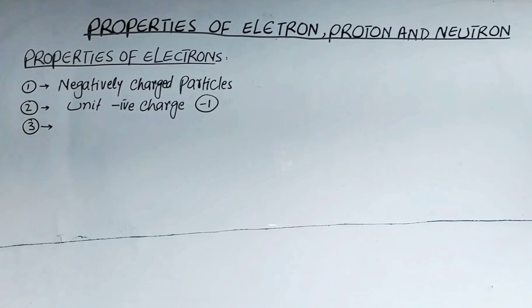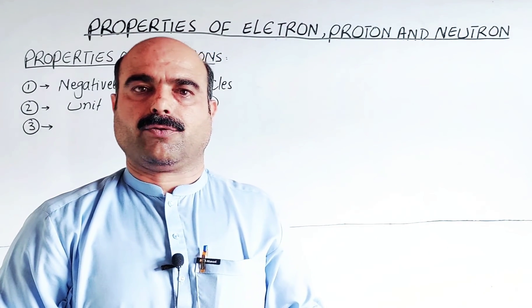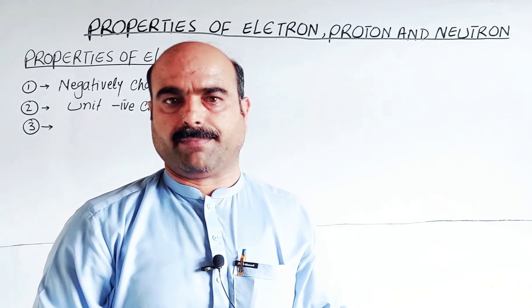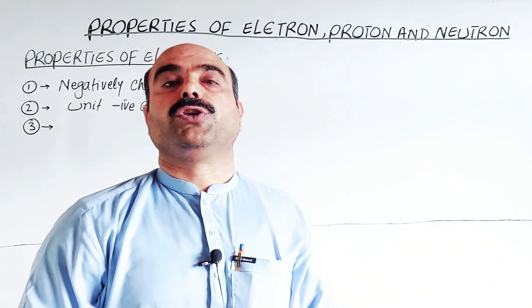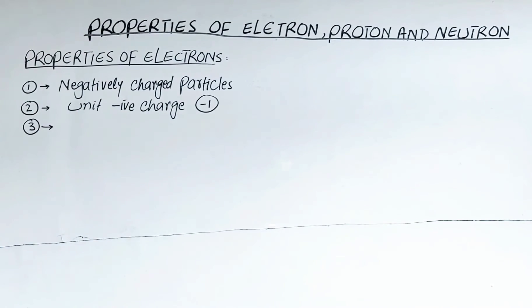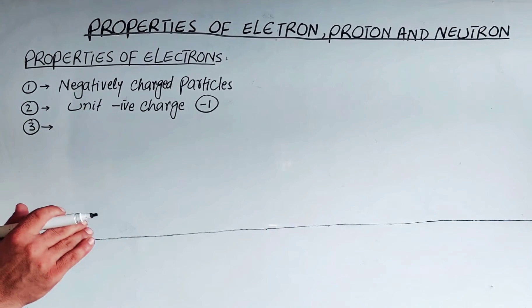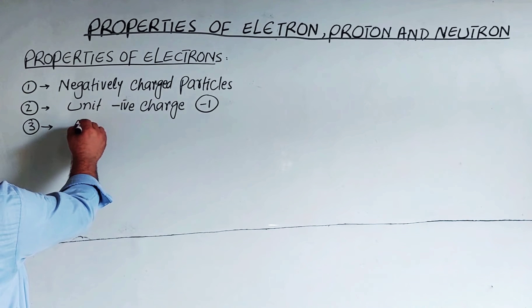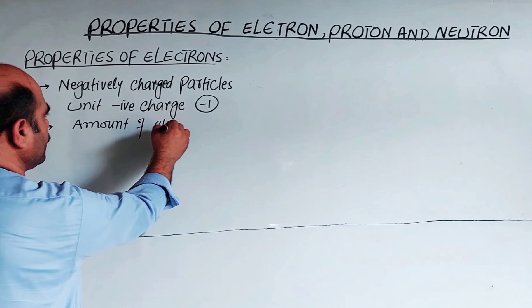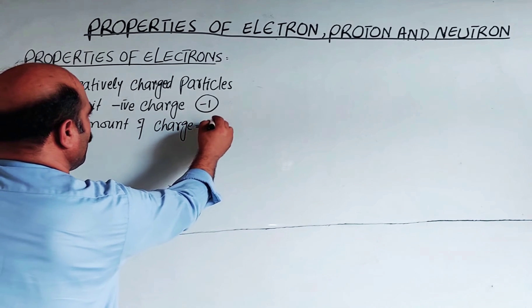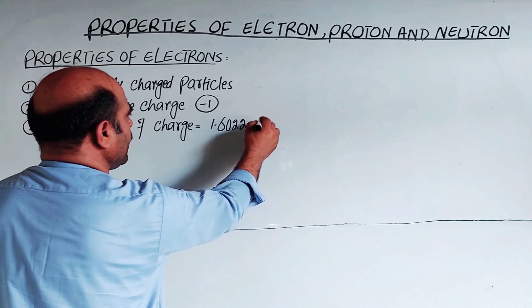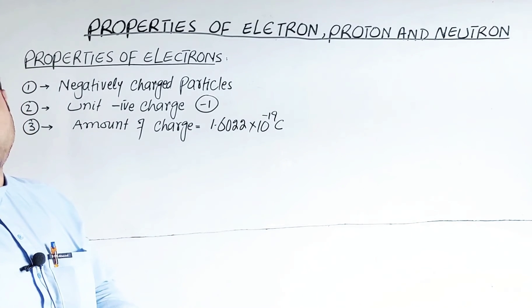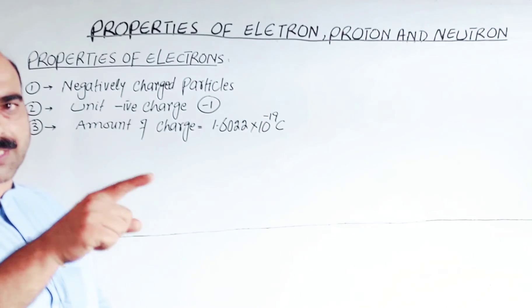The amount of charge on the electron is minus one charge. To express this amount, the unit of charge is the coulomb. The charge on the electron is 1.6022 × 10⁻¹⁹ coulombs. The coulomb is a unit of charge, and it was proposed by Coulomb, who is a scientist.